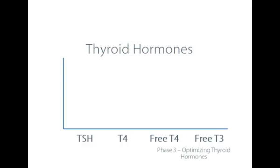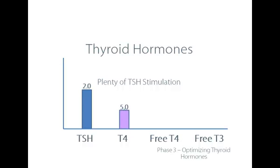We're going to look at TSH, T4, free T4, and free T3. As an example, let's say your lab tests come back and your TSH is about 2, which means there's adequate or optimal stimulation to the thyroid gland, but T4 production is low. In this case the thyroid is getting plenty of stimulation from TSH but for some reason is not able to respond or produce adequate amounts of its primary hormone T4.